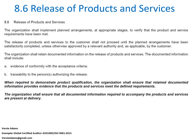Let's start by reading 8.6, Release of Products and Services, in its entirety. The organization shall implement planned arrangements at appropriate stages to verify that the product and service requirements have been met. The release of products and services to the customer shall not proceed until the planned arrangements have been satisfactorily completed, unless otherwise approved by a relevant authority and as applicable by the customer. The organization shall retain documented information on the release of products and services. The documented information shall include: (a) evidence of conformity with the acceptance criteria, and (b) traceability to the person or persons authorizing the release. Note: when required to demonstrate product qualification, the organization shall ensure that retained documented information provides evidence that the products and services meet the defined requirements. And the organization shall ensure that all documented information required to accompany the products and services are present at the time of delivery.